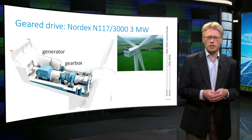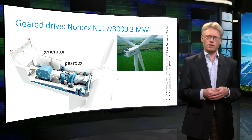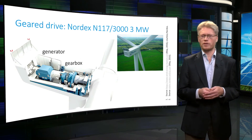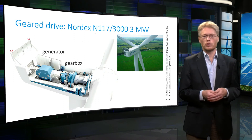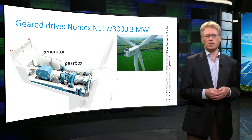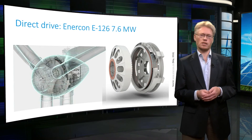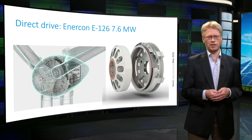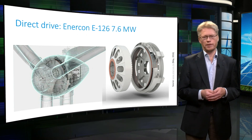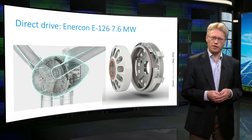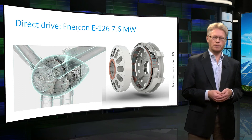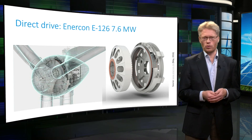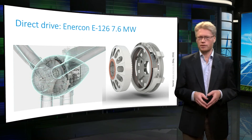As an example of a wind turbine with a geared drive, the 3 MW Nordex N117 is depicted. We see the typical form of the nacelle of such a wind turbine. We also see the gearbox and the compact high speed generator. As an example of a direct drive wind turbine, the 7.6 MW Enercon E126 is depicted, together with the generator of this turbine. As said earlier, direct drive generators are very large. In this case, the diameter of the generator is in the order of 10 meters. Because the generator is so large, the nacelle is built around this generator, giving it a different form.